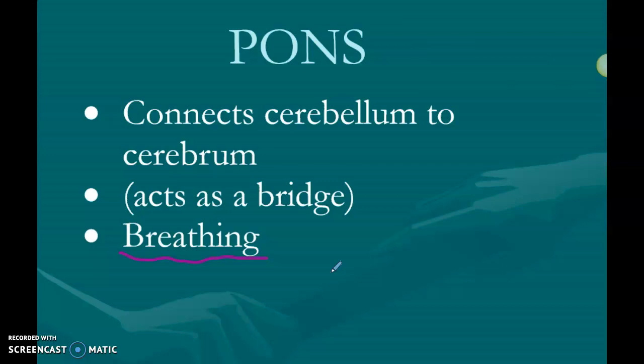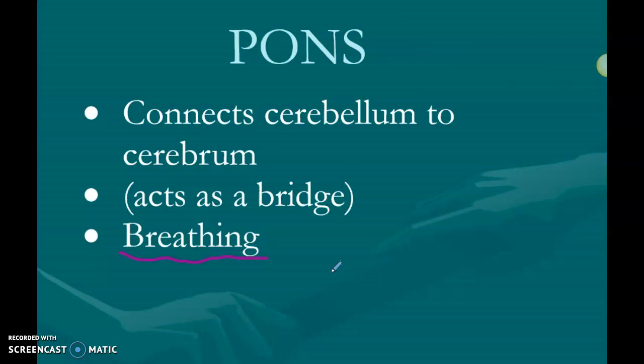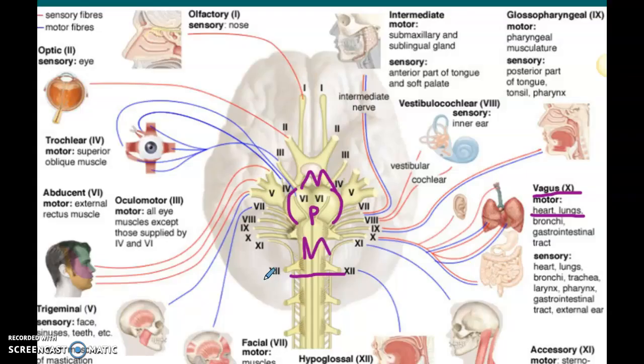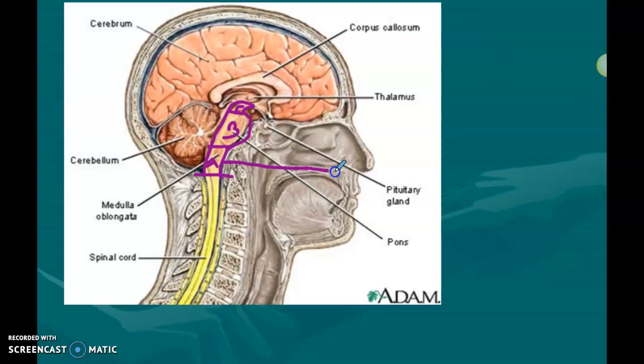Your midbrain has a lot of cool functions too. The biggest note is that it is a connector — it connects up to the diencephalon. If we look at the diagram, a lot of the nerves that go to the eye travel to the midbrain, so it is associated with eye reflexes. We'll talk about reflexes in a further video, but the midbrain is strongly tied to eye reflexes. So to summarize: the medulla controls heart rate and breathing, the pons is a backup respiratory center controlling rate and depth of breath, and the midbrain is mostly associated with eye reflexes.